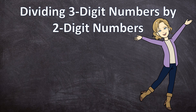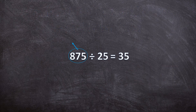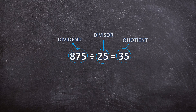But before we continue, let's just recap our terminology. So the first example: 875 divided by 25 is equal to 35. The 875 is the dividend, the 25 is the divisor, and the 35 is the quotient — it's the answer of our division sum.